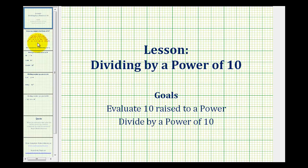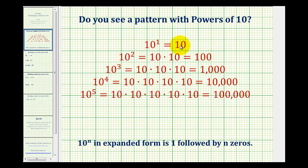Let's first take a look at raising ten to a power. Ten to the first is equal to ten. Ten to the second — we'd find the product of two factors of ten — which is equal to one hundred. Ten to the third, we'd multiply three factors of ten, which is equal to a thousand. Ten to the fourth would be four factors of ten, which would equal ten thousand, and ten to the fifth would be five factors of ten, which is equal to one hundred thousand.